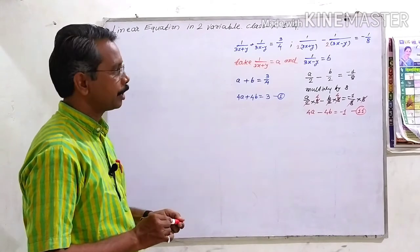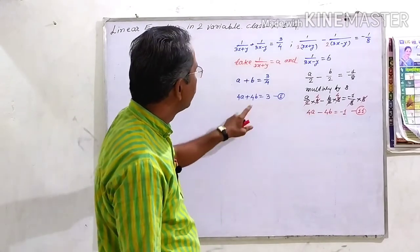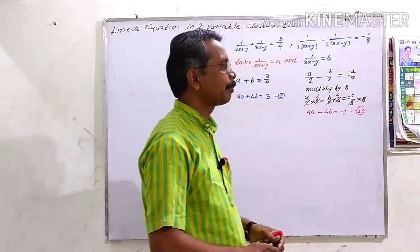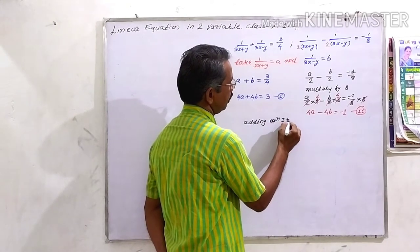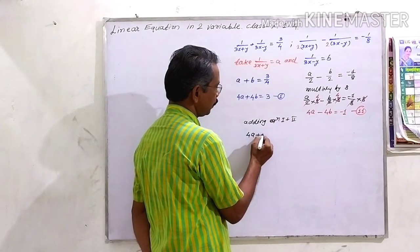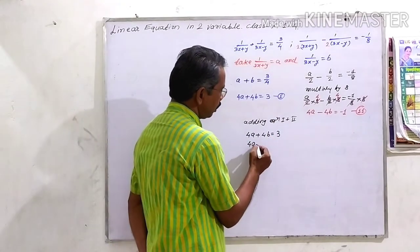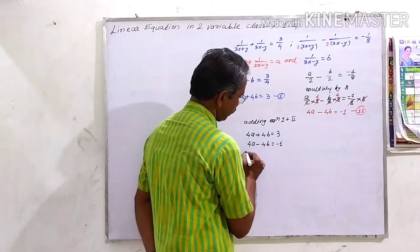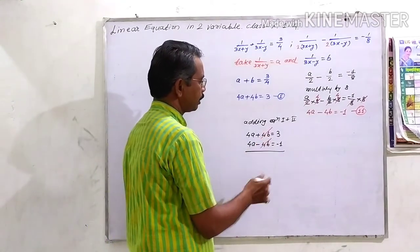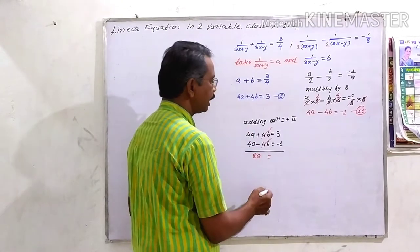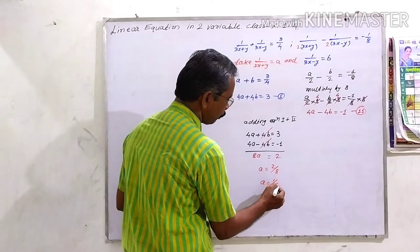Now we have two equations in simplest form: equation 1 is 4a plus 4b equal to 3, and equation 2 is 4a minus 4b equal to minus 1. Since we have positive 4b and negative 4b, we add the two equations. Writing both: 4a plus 4b equal to 3, plus 4a minus 4b equal to minus 1. The 4b terms cancel, giving 8a equal to 2, so a equal to 2 upon 8, and hence a equal to 1 upon 4.